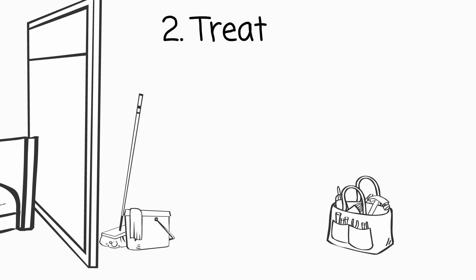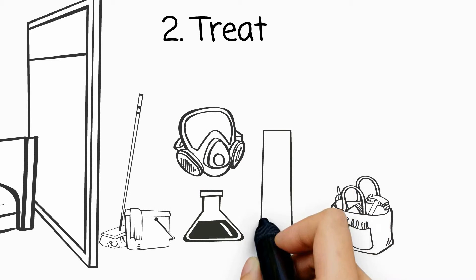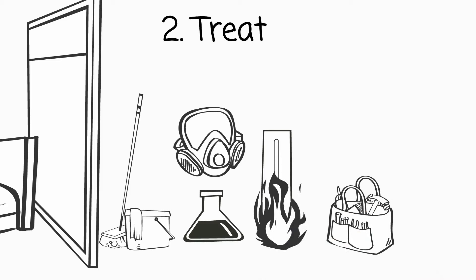Then you need to decide whether or not you're going to use a chemical or a heat treatment. A chemical treatment is the use of insecticide, whereas a heat treatment raises the temperatures of a room to kill off any live bedbugs and eggs.